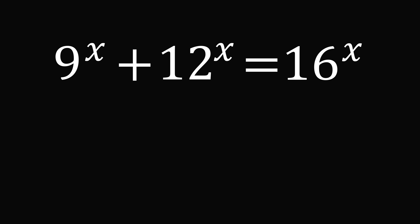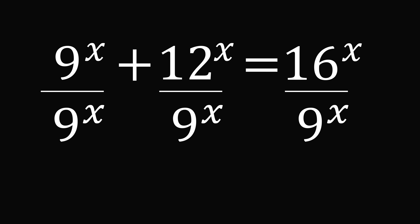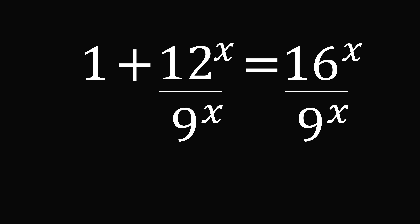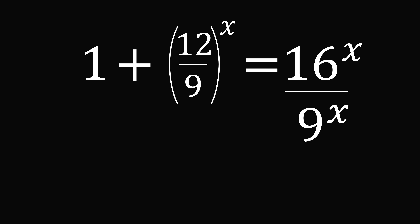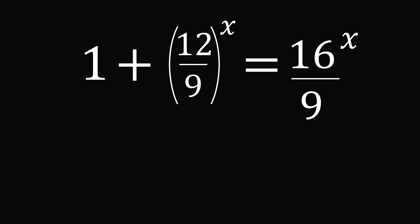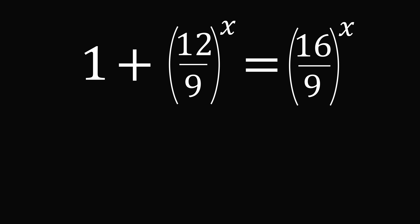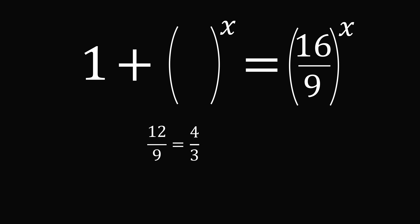Let's get started with Problem 1. The first thing we'll do is divide each side of the equation by 9 to the power of x. This means each term is divided by 9 to the power of x. Now 9 to the power of x divided by 9 to the power of x equals 1. Then 12 to the power of x divided by 9 to the power of x can be rewritten as 12 over 9 to the power of x. Now 12 over 9 is equal to 4 over 3, so we can substitute that in.